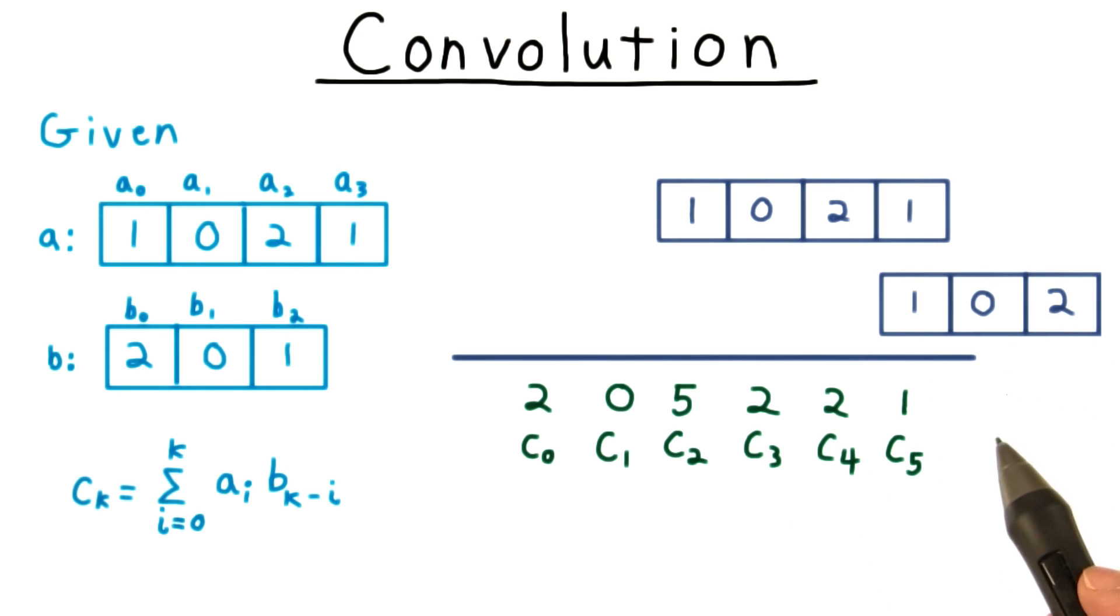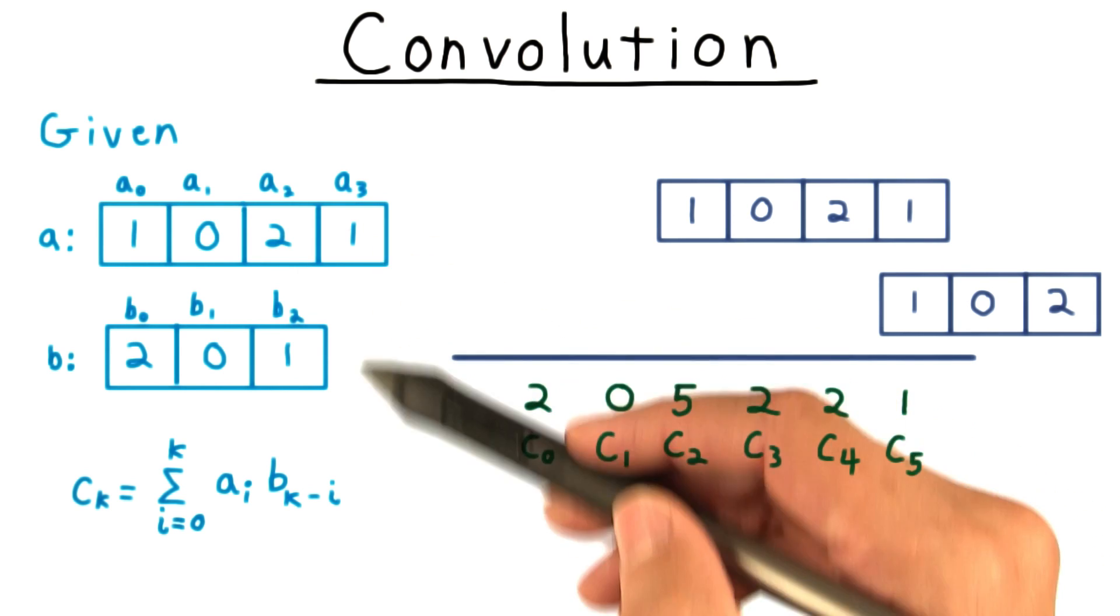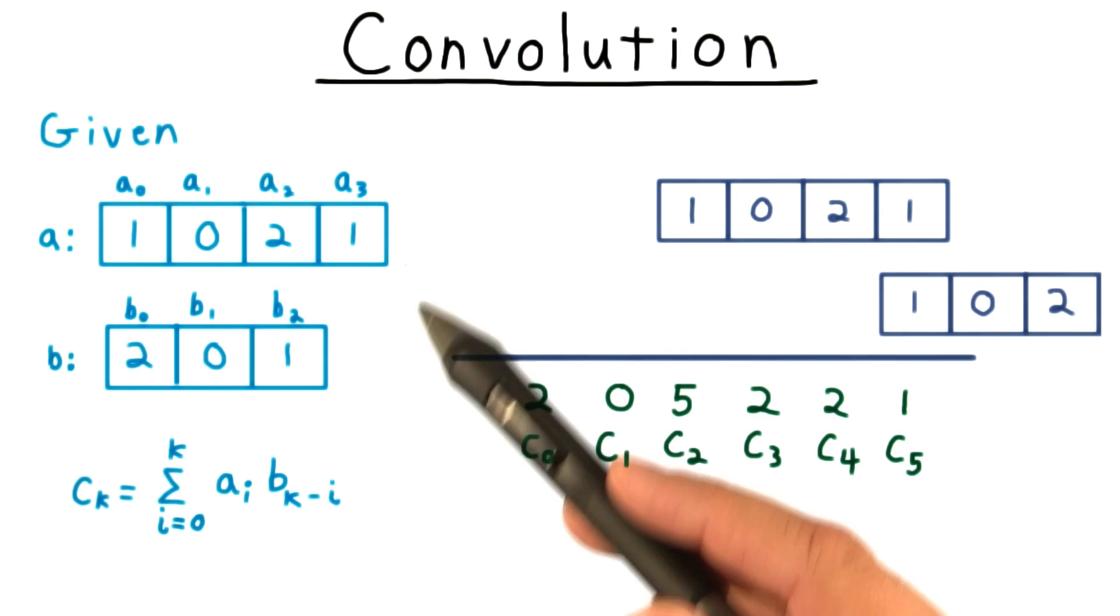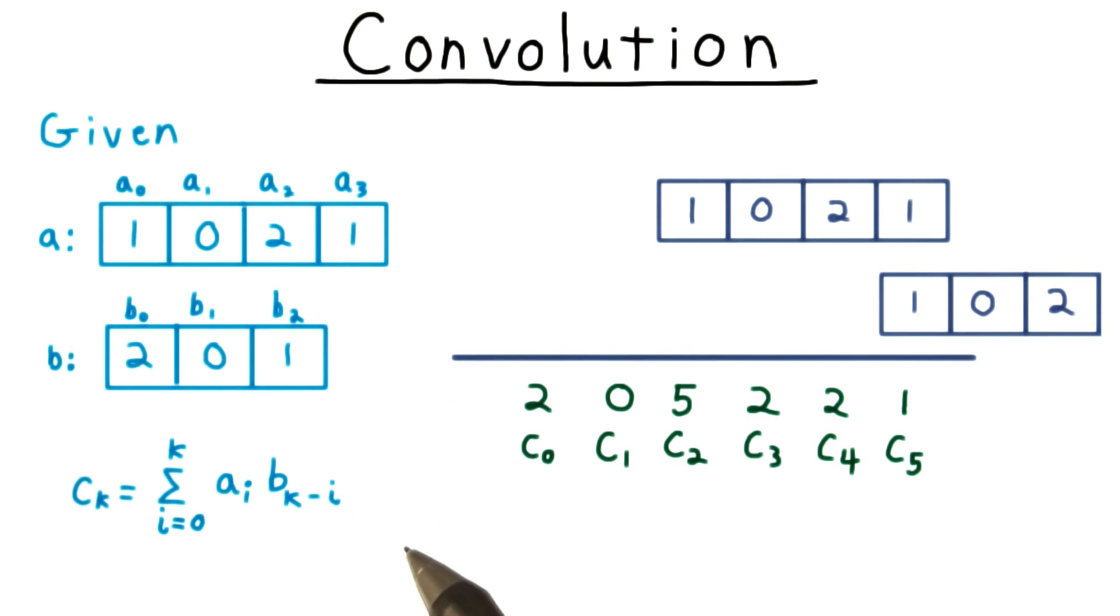Convolution has many applications, but the one that will be most convenient for us to talk about is multiplying polynomials. Given two coefficients of polynomials, we can find the coefficients of the product just by convolving the two sequences of coefficients.